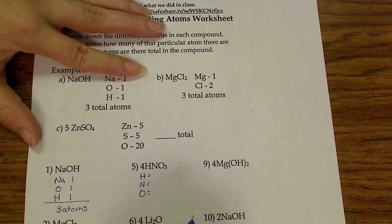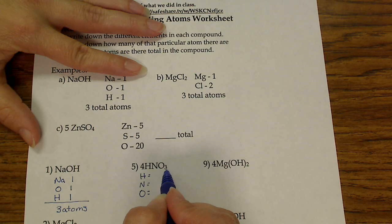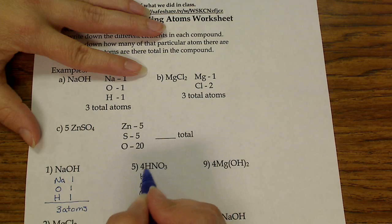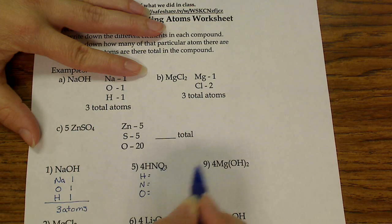Then I'm going to find out how many I have of each one. I'll start with my subscript, which is a three, next to the oxygen. Because it's not in parentheses, I know that this only goes to my oxygen.